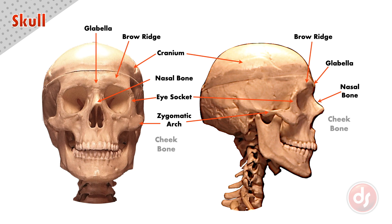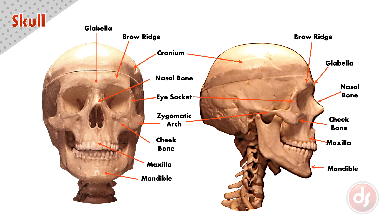Below the eye socket is what we call our cheekbone. The upper jaw is called the maxilla and the lower jaw is called the mandible. Behind the mandible on the bottom of the cranium is a hard bump called the mastoid process. We also have a small horseshoe-shaped bone floating in our throat called the hyoid bone.